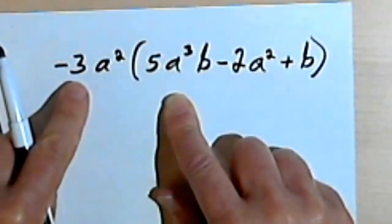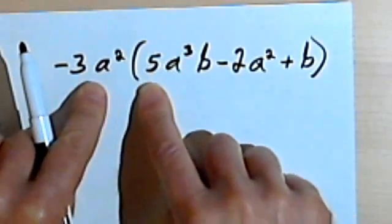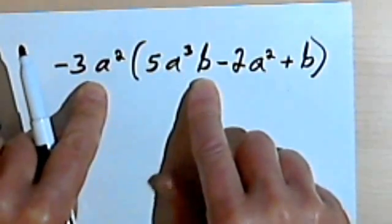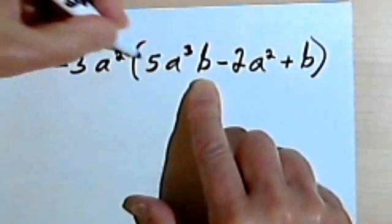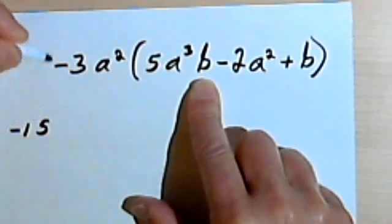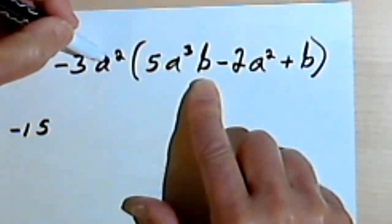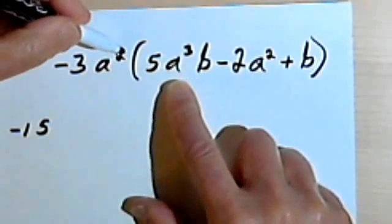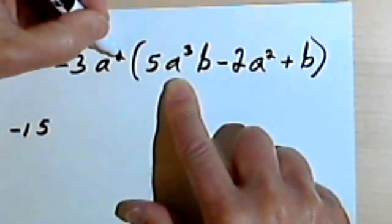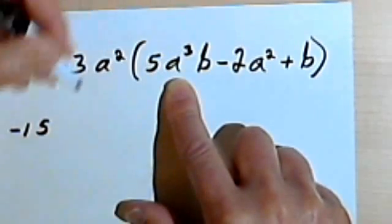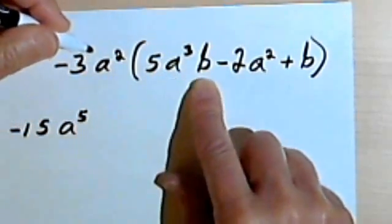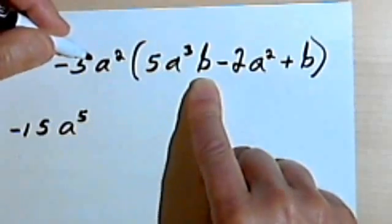First we're going to multiply negative 3a squared times 5a to the third b. So negative 3 times 5 is going to give me negative 15. Then I've got a squared times a to the third — the exponents are 2 and 3, I'll add them together and get a to the fifth, and just b.